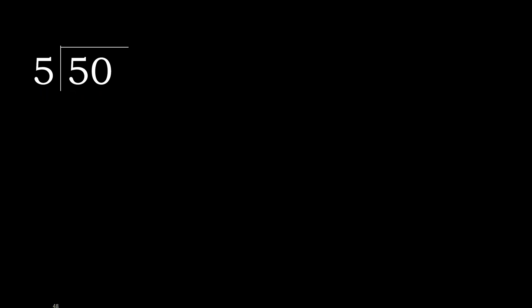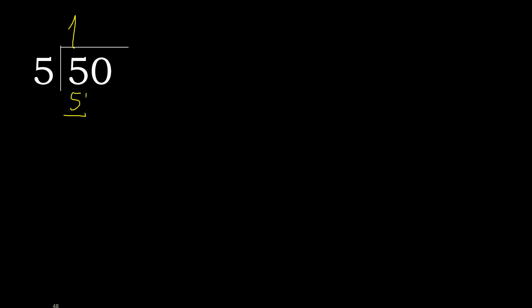50 divided by 5. 5 is not less, therefore with 5. 5 multiplied by which number is nearest to 5 but not greater? 5 multiplied by 2 is 10, which is greater. 5 multiplied by 1 is 5, which is not greater. 5 minus 5 is 0.